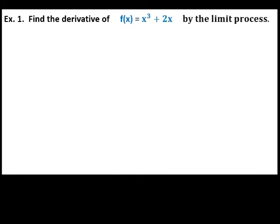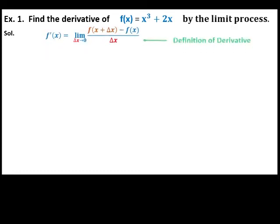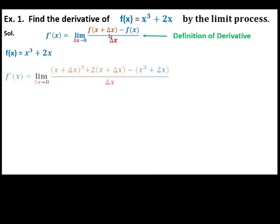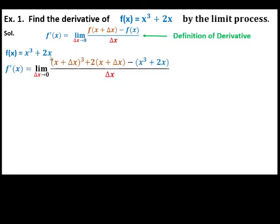For example, find the derivative of f of x equals x cubed plus 2x by the limit process. Starting with the definition of the derivative, we replace x with x plus delta x. So x is replaced with x plus delta x minus the original function, f of x, all over delta x.